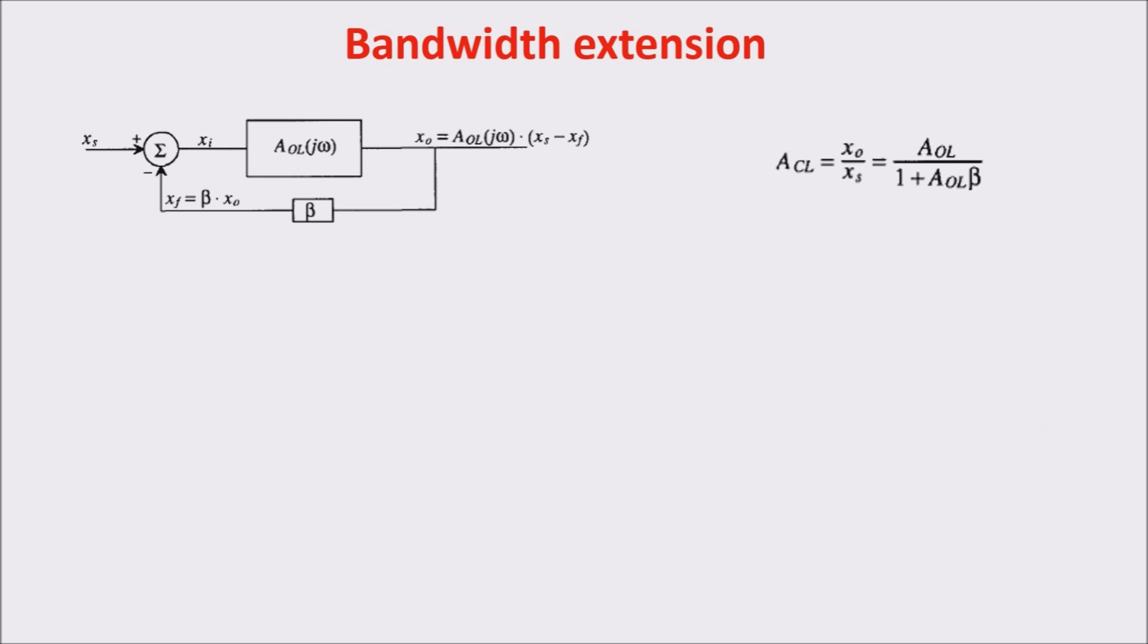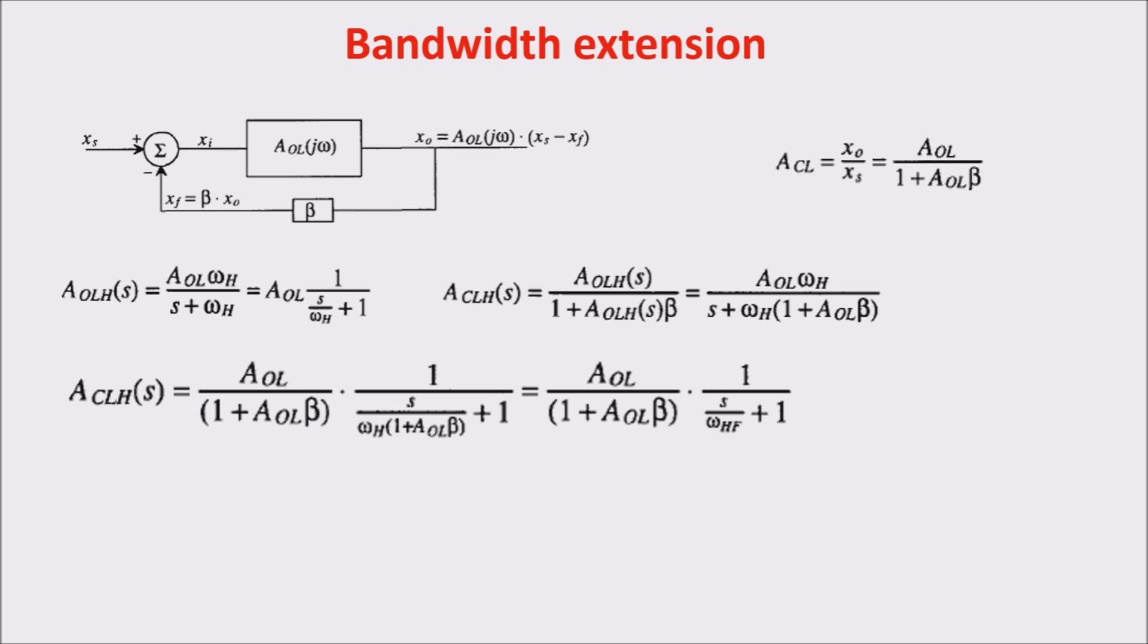Negative feedback also increases the usable bandwidth of an amplifier. Assuming that an amplifier has the frequency response given by this equation, AOLH is simply the high frequency dependent version of AOL and it is approximated using a first order pole at omega h. Putting this equation into that of the closed loop, we get this other equation and sorted things out, we get this final equation where you see that now the pole is not at omega h but at a higher frequency which is omega h times the loop gain at zero frequency, so AOL times beta plus one. We see also that the gain at low frequency is decreased by the same amount that the bandwidth has increased.